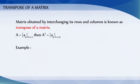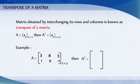For example, if A is the matrix 3, 8, 5, 1, 0, minus 1 of order 2 by 3, then transpose of A is A transpose equals 3, 1, 8, 0, 5, minus 1 and order of this matrix is 3 by 2.